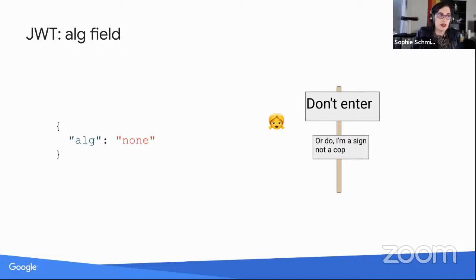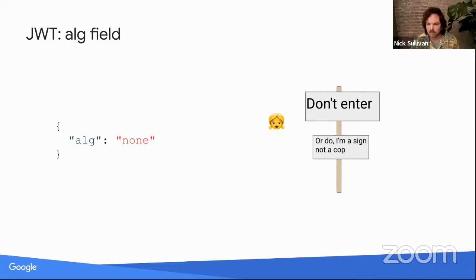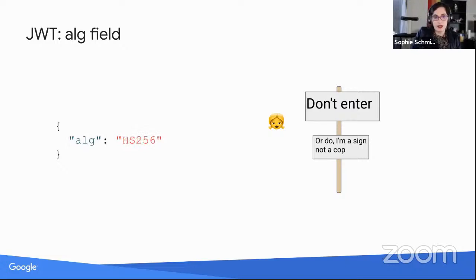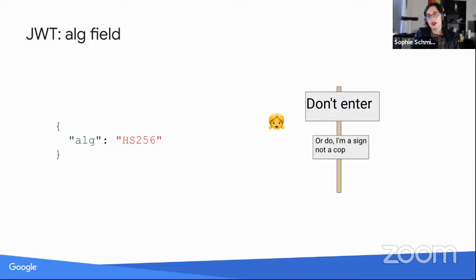The problem isn't only 'none' as an algorithm — the existence of an algorithm field at all is a problem. You can switch the algorithm field to some symmetric scheme, at which point implementations often just take the public key and interpret it as secret key material, meaning anyone can mint a valid token.